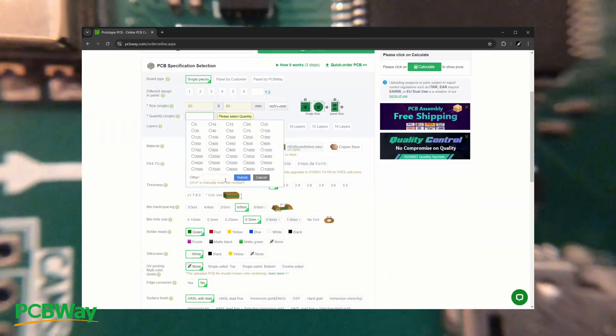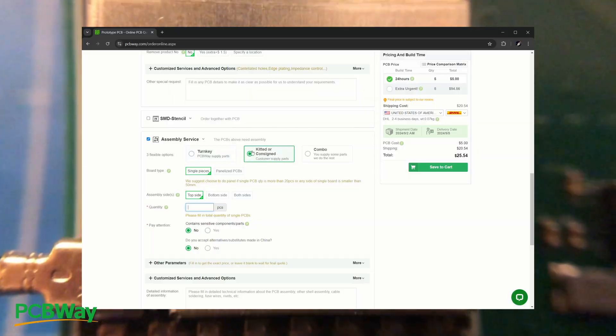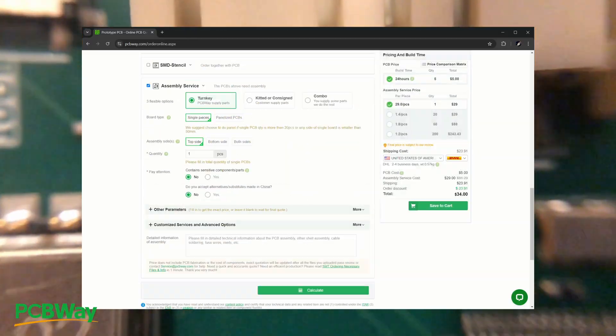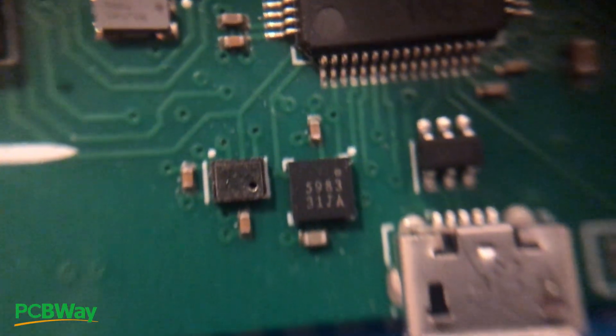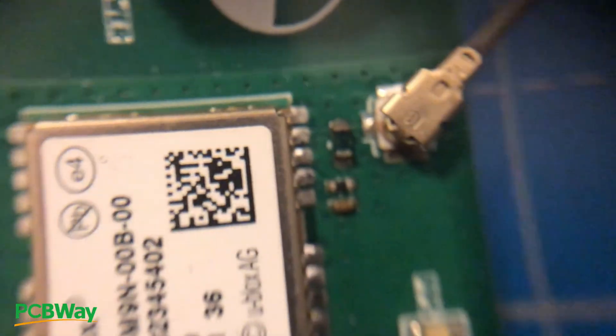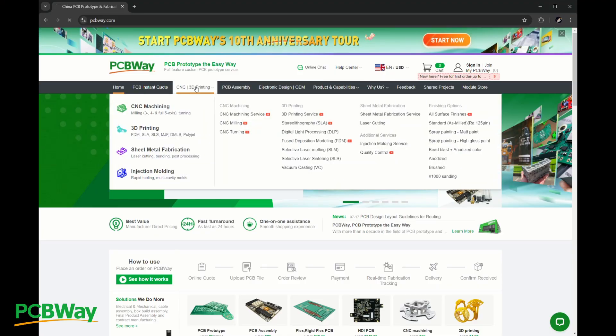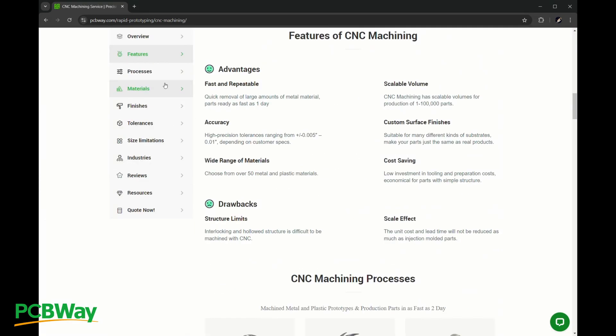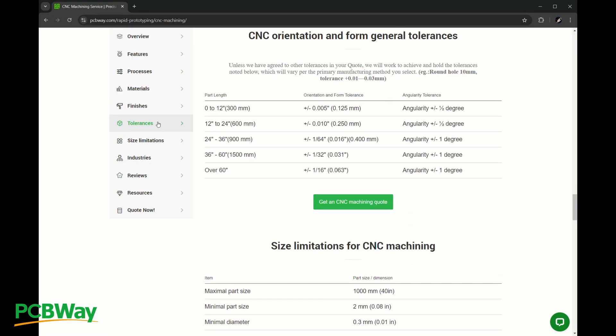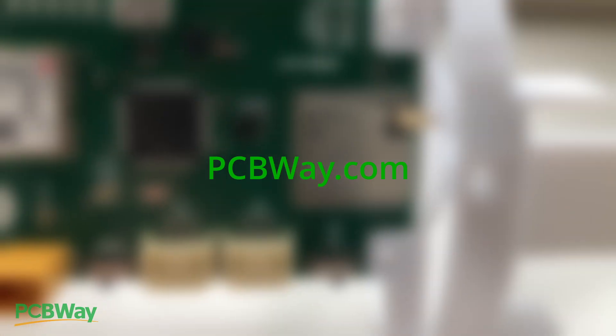PCBWay provides PCB manufacturing, component sourcing and assembly services at a very competitive price, which I find ideal for producing these flight computers in low volume. Since I'm pretty useless at SMD soldering, having boards populated and soldered professionally has allowed me to include tiny 0402 components, LGA packages and sensitive chips in my designs without any concerns. PCBWay also provides CNC machining and advanced 3D printing services, which I might be using soon to solve some of my parachute ejection problems, but more on that later in the video. If you're interested, visit PCBWay.com or click the link in the description.